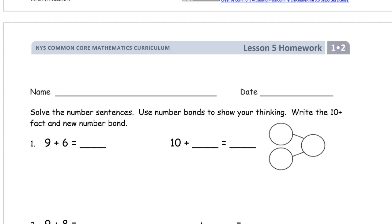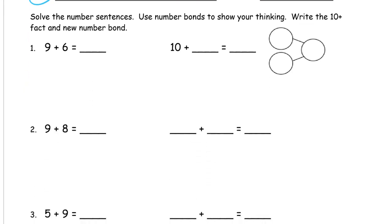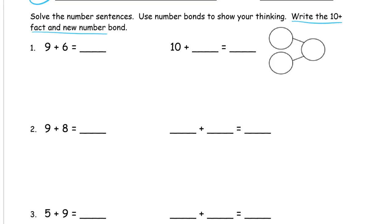Welcome to the homework. This is lesson 5, grade 1, module 2. Write your name first. We're solving number sentences and using number bonds to show our thinking. And we're writing the 10 plus fact and the new number bond. So we've been practicing 9 pluses for most of a week now. And you should start to see these 9 pluses as 10 pluses.